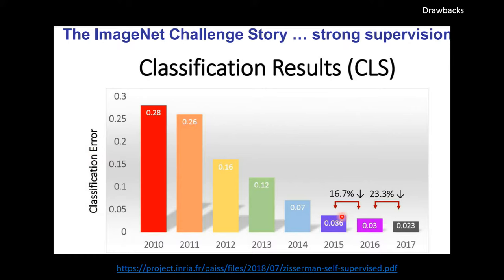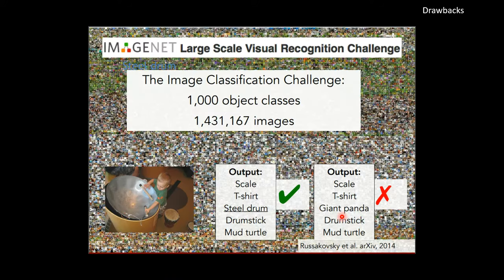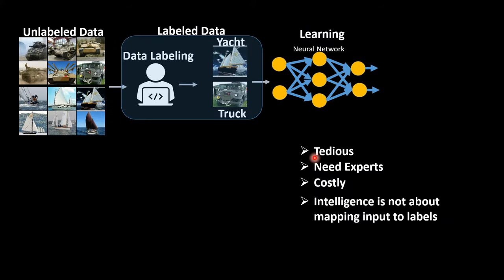But one caveat is that in order to do supervised learning, we need a large amount of data. For example, in this ImageNet challenge where the AI model is able to defeat humans, they are using nearly 1.4 million images. That's a huge amount of data.